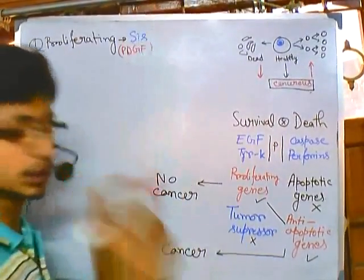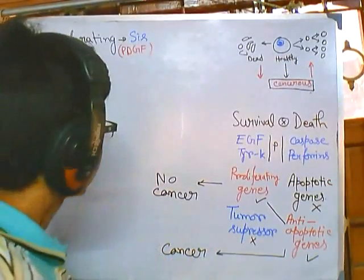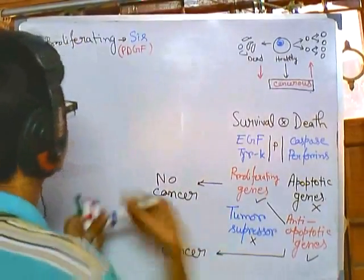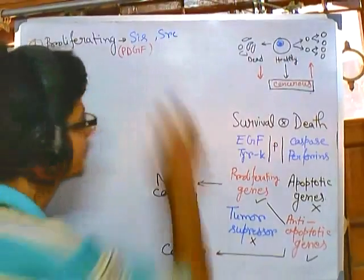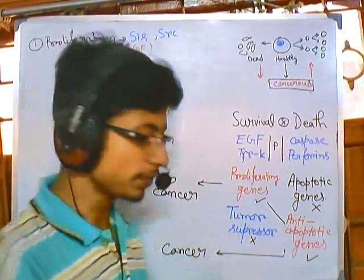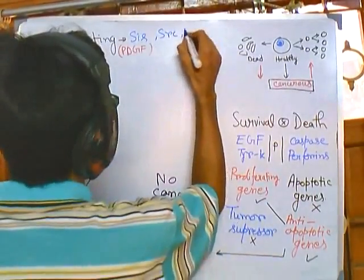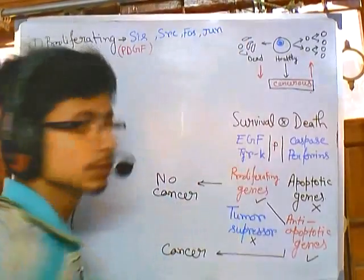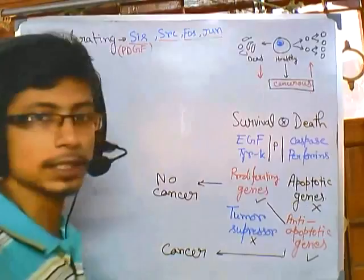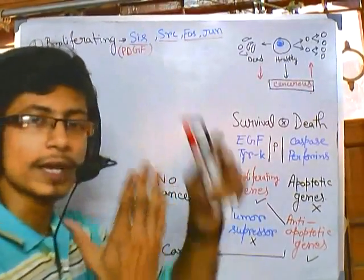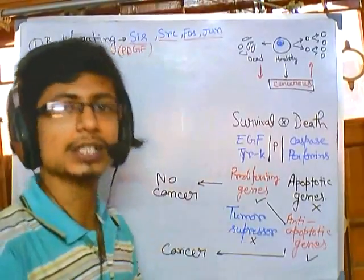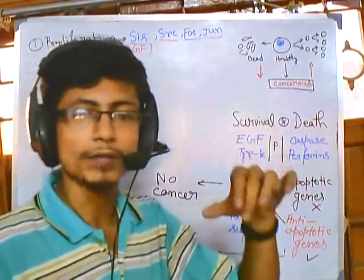We also have proteins that can phosphorylate things — the tyrosine kinase protein, encoded by the src gene. We also have different transcription factors involved in cell proliferation and growth. Growth factor receptor-producing genes, phosphorylation genes involved in signal transduction cascades, and transcription factor genes are all part of proliferating genes.